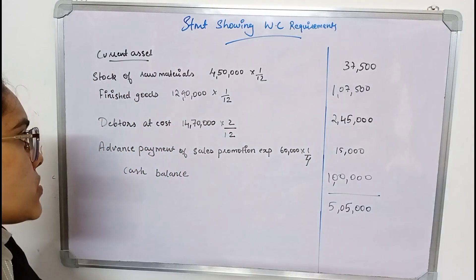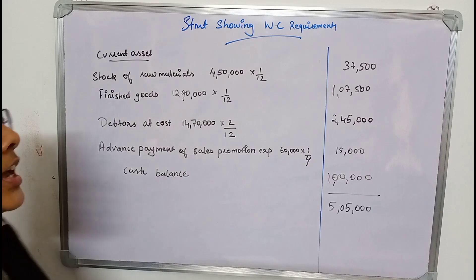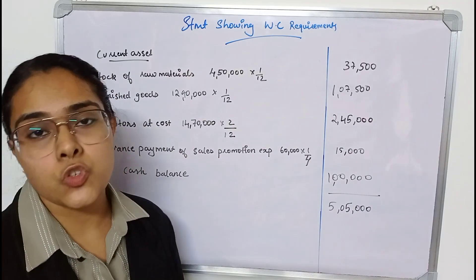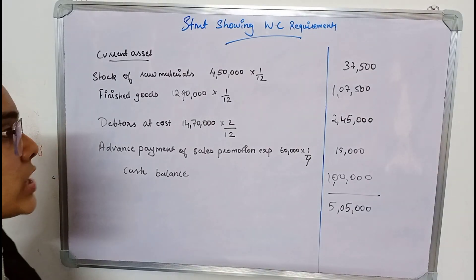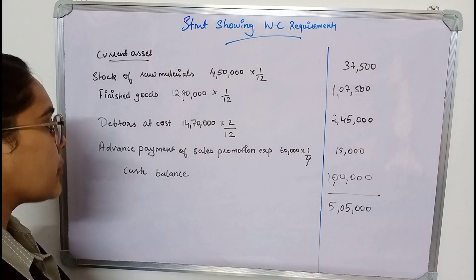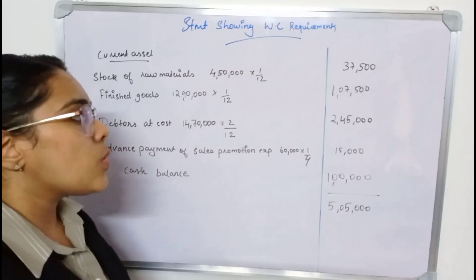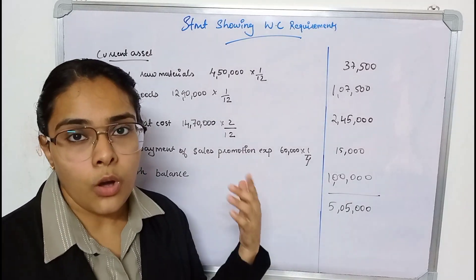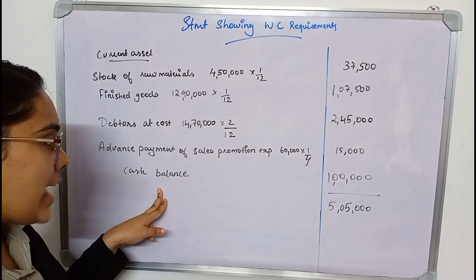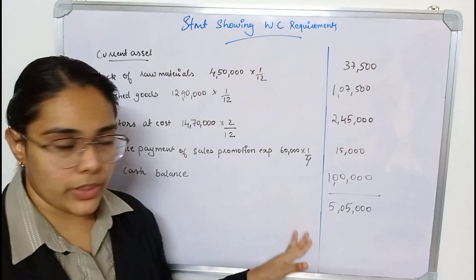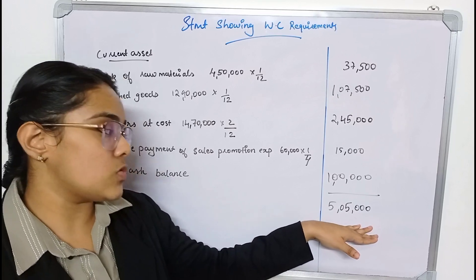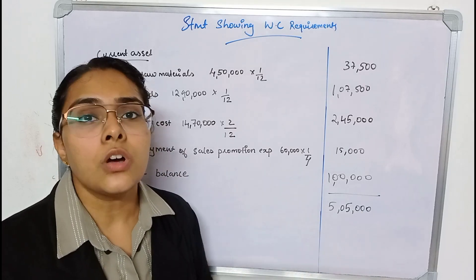Sales promotion expense is paid quarterly in advance — 60 thousand × 1/4 = 15 thousand. The company also maintains a cash balance of 1 lakh. Adding all current assets: 37,500 + 1,07,500 + 2,45,000 + 15,000 + 1,00,000 = total current assets of 5 lakh 5 thousand.